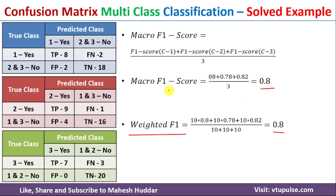In this video I have discussed how to convert a multi-class classification confusion matrix into a binary confusion matrix and how to calculate the different performance metrics. I hope the concept is clear. If you like the video, do like and share with your friends. Press the subscribe button for more videos and the bell icon for regular updates. Thank you for watching.